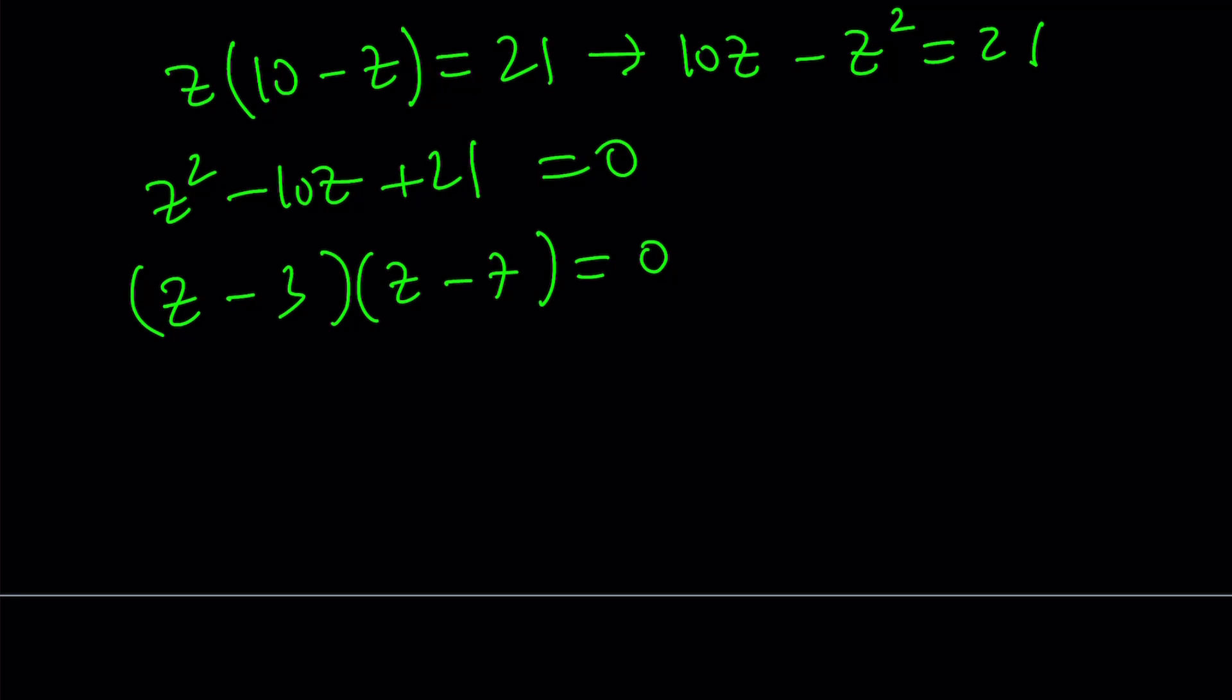Now if z minus 3 is equal to 0, then z is equal to 3. But z is ln x. This means x is e to the power 3. If z is equal to 7, which is ln x, from here we get x equals e to the power 7.